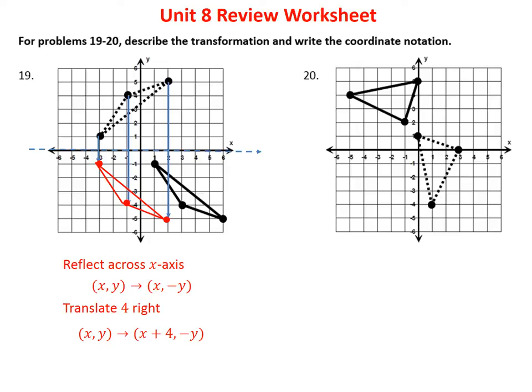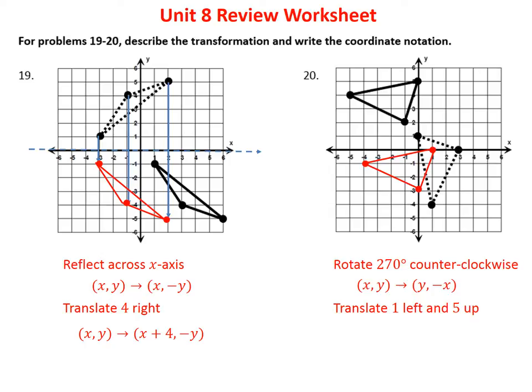On the second problem, I see that rotating 90 degrees clockwise — which is 270 counterclockwise — gets the dotted figure into the right orientation, giving (x, y) → (y, −x). Then I need to translate it 1 left and 5 up. Since y is now occupying the x position, the final notation is (x, y) → (y − 1, −x + 5). That combines both the rotation and the translation.